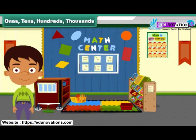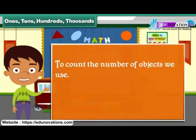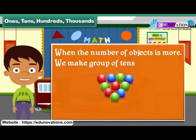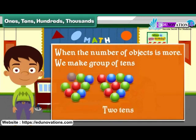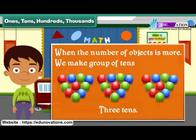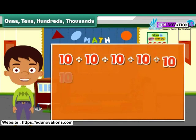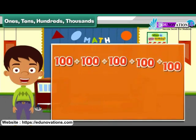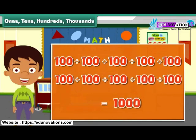Ones, tens, hundreds, thousands. To count the number of objects, we use ones. When the number of objects is more, we make groups of tens and count them as one-tens, two-tens, three-tens. What if there are lots of tens? We make a ten-tens group and call it hundreds. When we have ten hundreds, we call it a thousand.